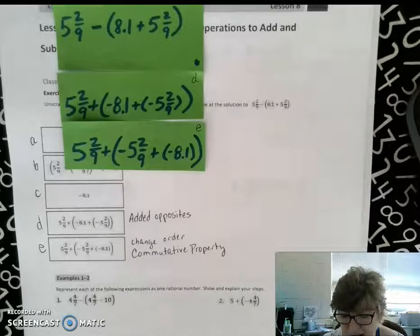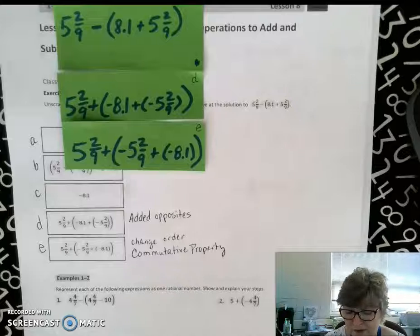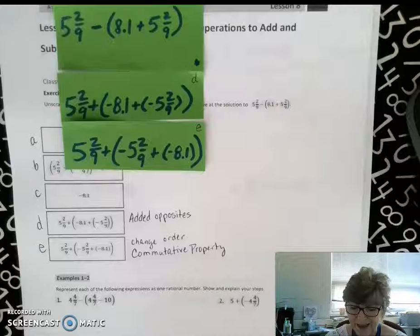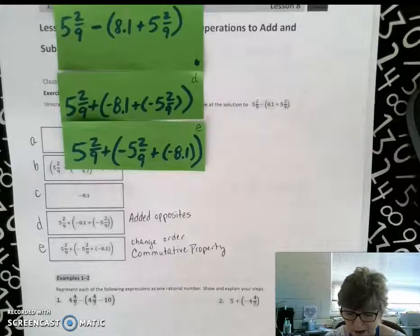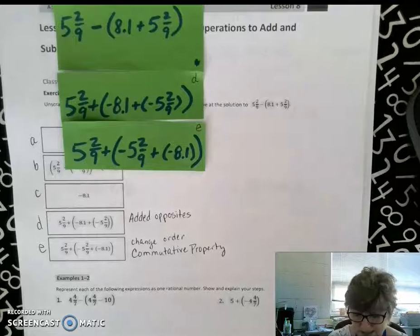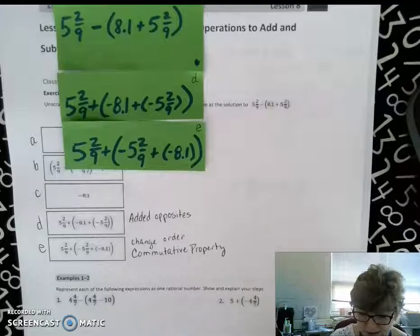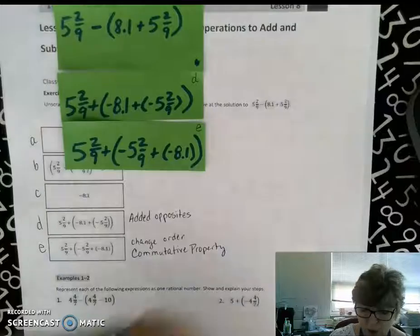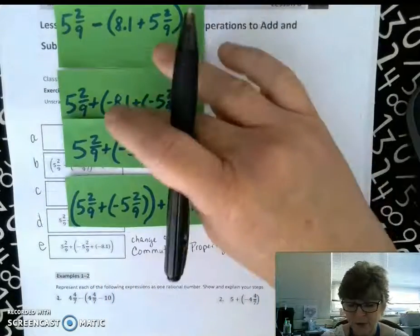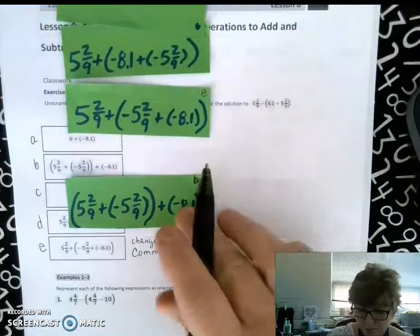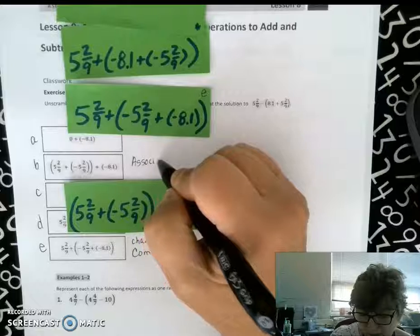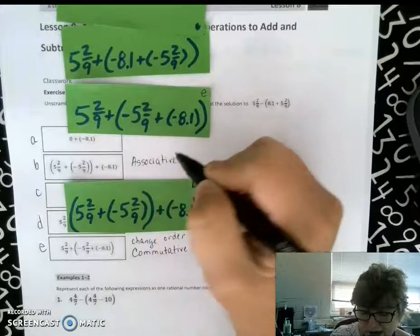We know that when everything is addition it's okay if we move things around or if we group things differently. That's the associative property and also the commutative property. I've decided that I think I would like to group 5 and 2/9ths and negative 5 and 2/9ths together because those numbers are compatible and they actually form a zero pair. I'm going to change my grouping and changing the grouping means that I am utilizing step B and we call that the associative property. We change the groups.